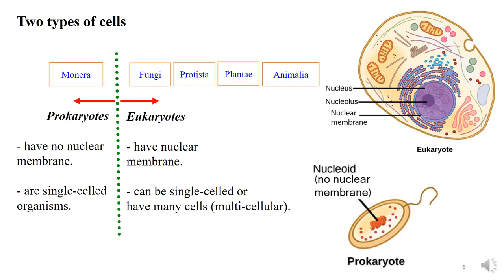The differences between prokaryotic and eukaryotic cells: prokaryotes have no nuclear membrane, whereas eukaryotes have a nuclear membrane. In the prokaryote, the genetic material is in the center and is not surrounded by any membrane — this is called the nucleoid region. In the eukaryotic cell, the DNA is surrounded by a nuclear membrane. This is one big difference between a prokaryotic and a eukaryotic cell.